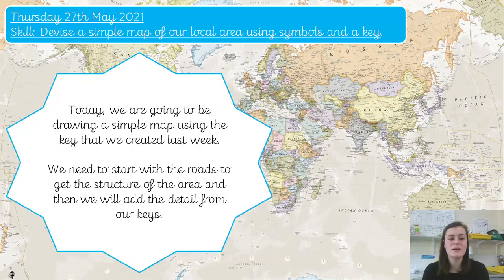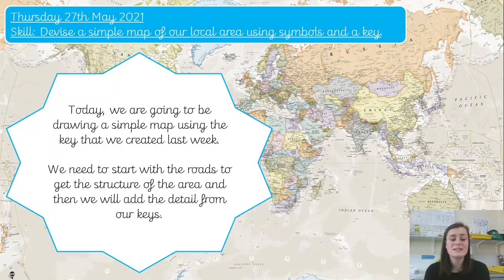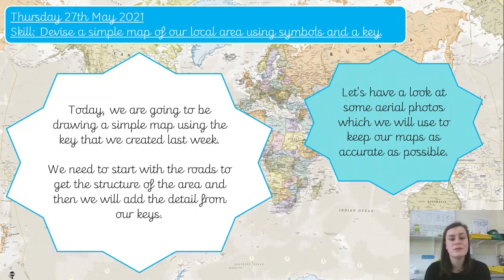So today we are going to be drawing a simple map using the key that you created last week. You will have to do this from memory, or if you want to you could create a new one that you could then use for this map. We need to start with the main roads to get the structure of the area, and then you can add in the detail from your key. On the next few slides we've got some aerial photos which you can use to keep your maps as accurate as possible.